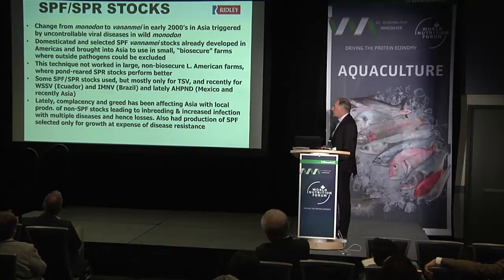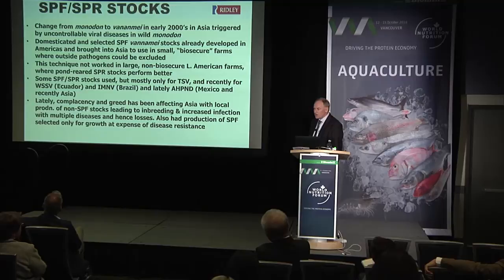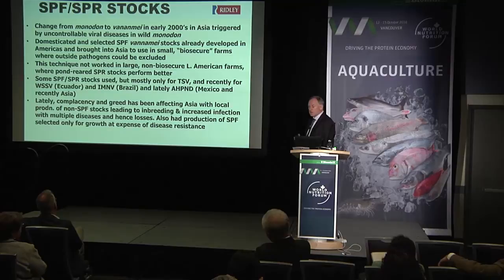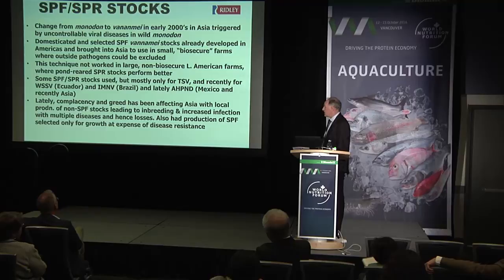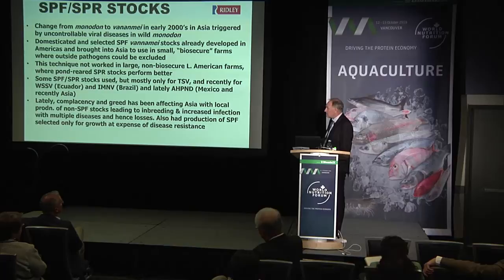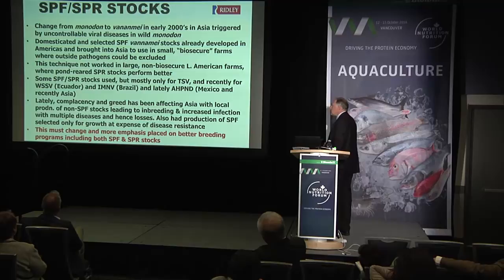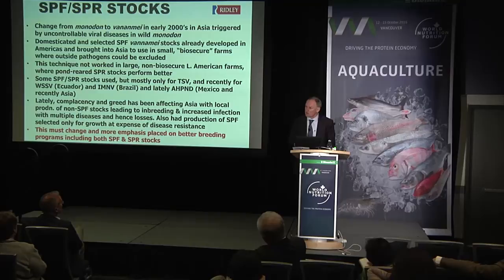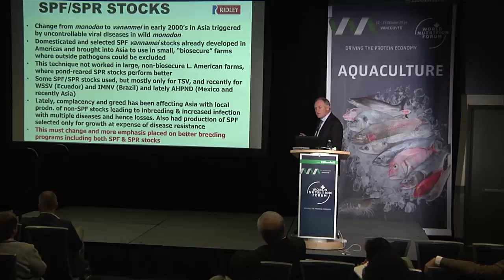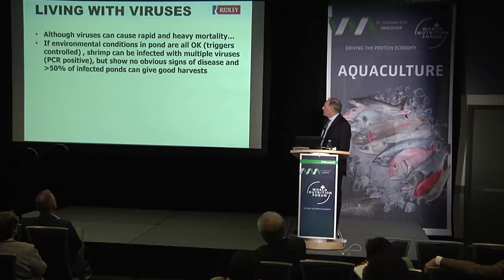In Asia, they originally imported SPF animals from Hawaii, but over time that diminished as they started producing stocks themselves without maintaining SPF status. They started selecting good-performing animals from ponds infected with multiple diseases, causing a lot of problems for the Asian industry now. They also have some SPF-selected animals, but selection was based purely on growth, not disease resistance, and that has come back to bite them with the introduction of AHPND. We really need to look much closer at developing SPF and SPR stocks to maintain biosecurity and the ability of animals to thrive in the presence of multiple diseases.